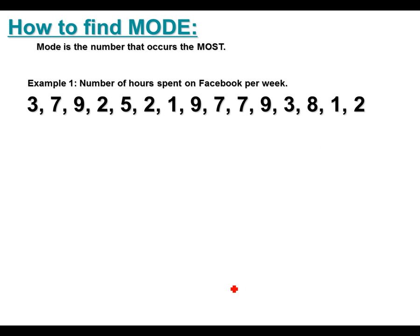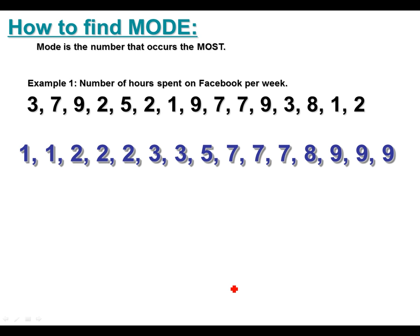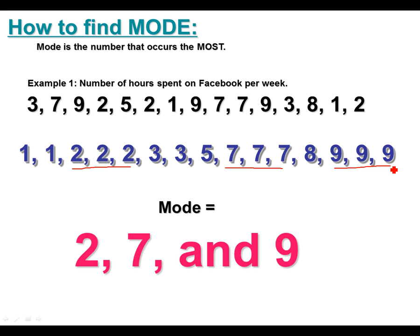The last part of the lesson is how to find mode. Mode is the number that occurs the most. You don't have to put them in order, but I'm doing so just to avoid guessing. We don't have to find the middle or add them up — just look over the numbers and find what occurs the most. There are three twos, only a couple threes, only one five, three sevens. Does anything occur more than three times? No. So the mode is actually three numbers: two, seven, and nine — all three occurred three times, so all three are the mode.